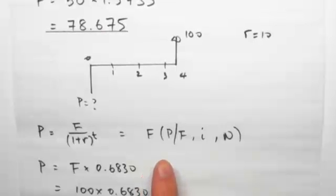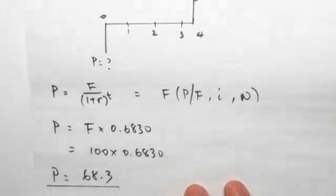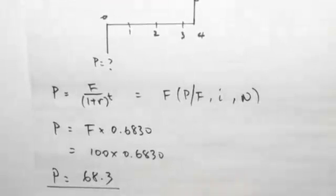We're finding P given F, i, and N. Here we know our F is 100, our i is 10%, and our N is 4. So we go to the back of our book, look at the table, find the relevant one, and from there we were able to get a factor of 0.6830. We times our future value, $100, by this factor, and we get our present value of $68.30.